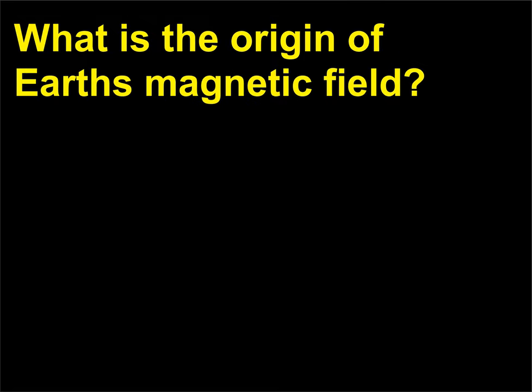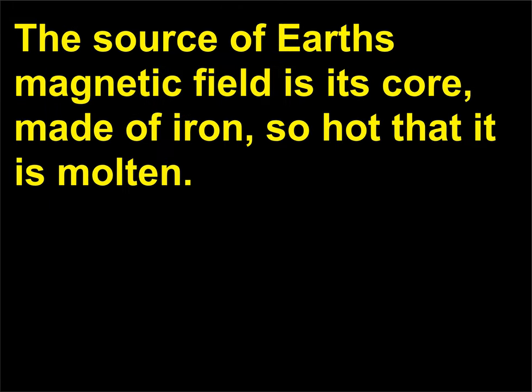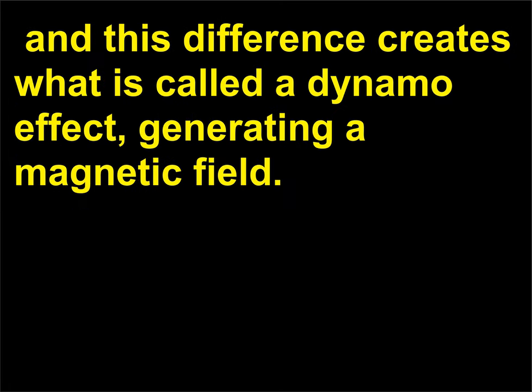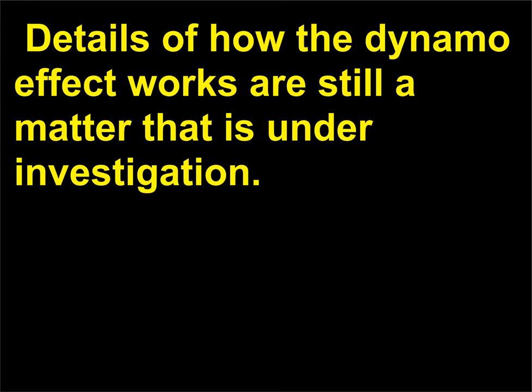What is the origin of Earth's magnetic field? The source of Earth's magnetic field is its core, made of iron, so hot that it is molten. It rotates at a slightly different rate than does Earth, and this difference creates what is called a dynamo effect, generating a magnetic field. Details of how the dynamo effect works are still a matter that is under investigation.